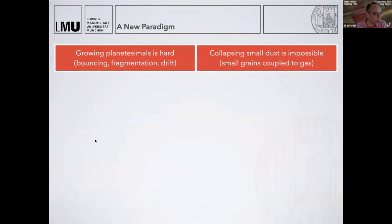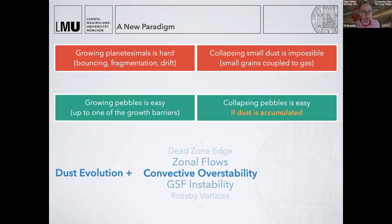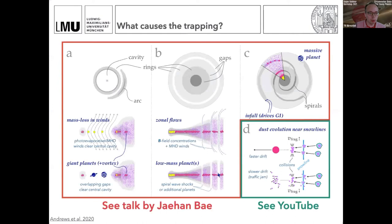There's a bit of a new paradigm coming out. The problem is we can't really grow planetesimals by making them collide and become ever bigger. The small dust we can't collapse because the particles are just too well coupled to the gas. But those two methods of making planetesimals can work together, because particle growth creates pebbles relatively easily, and those pebbles can also be collapsed relatively easily if the dust is accumulated somehow. The idea is that you have dust evolution creating the pebbles, and then you need just some method of making an accumulation of dust—some pressure overdensity—and then you have the right conditions to make planetesimals. The open question is how do you make any substructure that causes such traps? For this, I would encourage you to look at Jaehan Bae's talk.